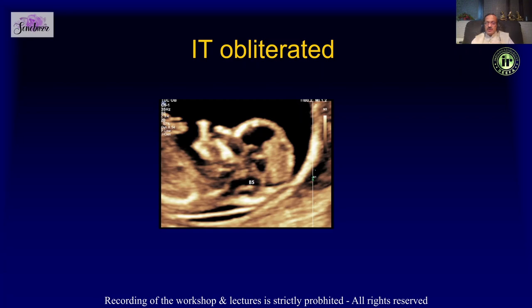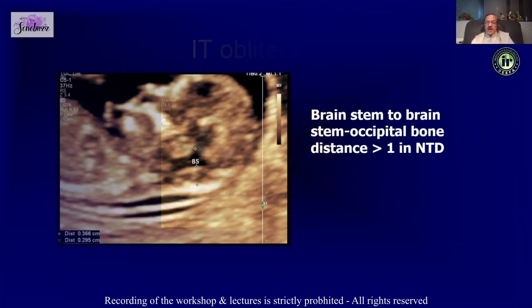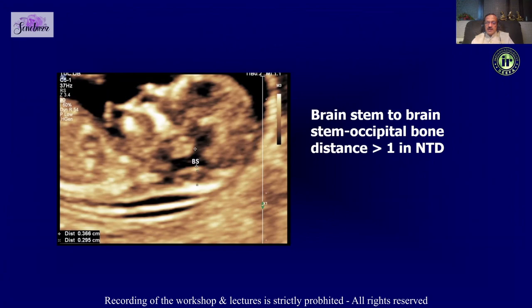This brainstem-to-occipital distance increases in open neural tube defects because of the Chiari II malformation — the herniation of posterior structures and the brainstem causes this distance to increase. That is the brainstem size and that is the brainstem-to-occipital distance.